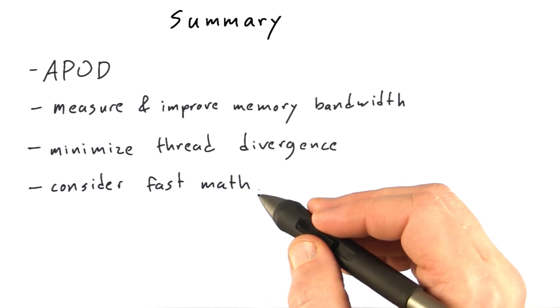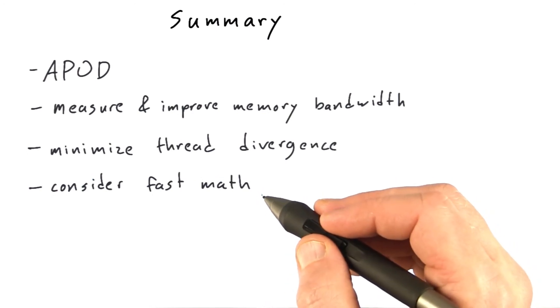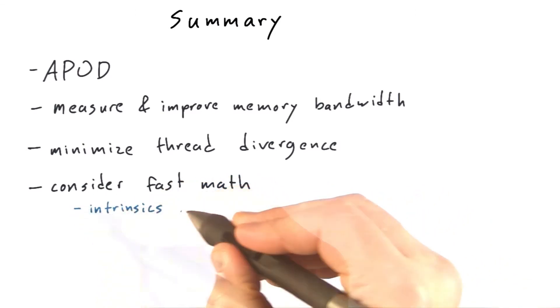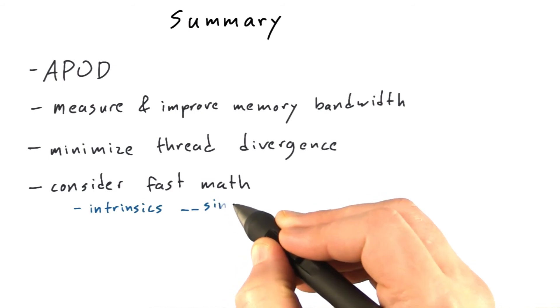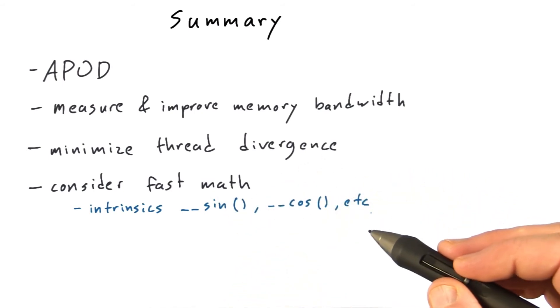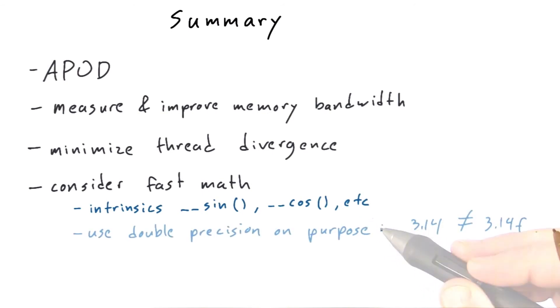If you're limited by the actual computational performance of your kernel, rather than the time it takes to get the data to and from your kernel, then consider using fast math operations. This includes things like the intrinsics for sine and cosine and so forth, that go quite a bit faster than their math.h counterparts at the cost of a few bits of precision. And remember that when you use double precision, it should be on purpose.